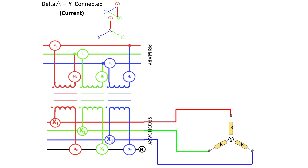I'm going to add a load to this transformer and it's going to be connected in a Y configuration. I could have just as well connected it in delta, but we have to choose something, so I chose a Y. I'm going to maintain a balanced system, and the load is going to be purely resistive because I want any phase shifting to be because of the transformer and not the load.